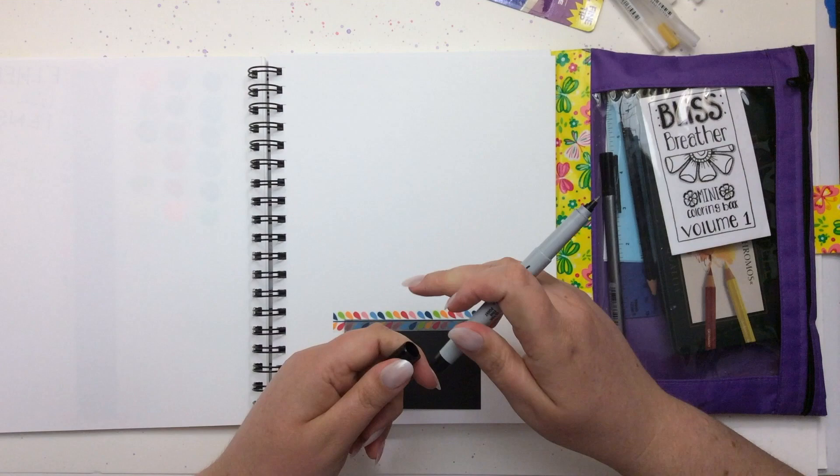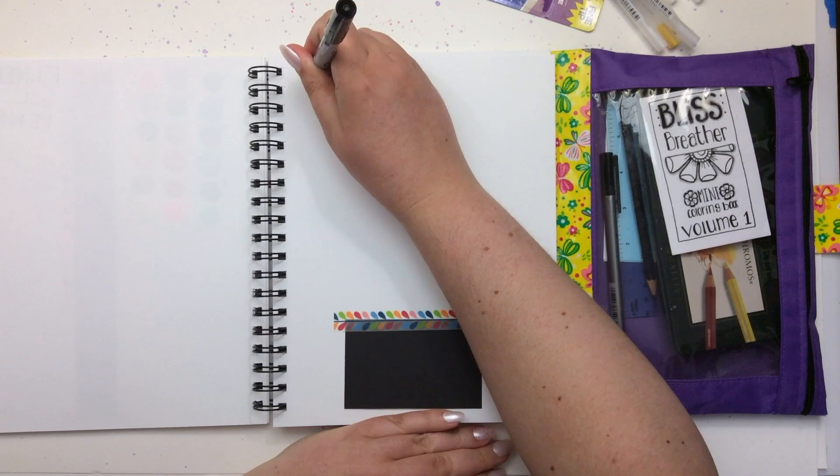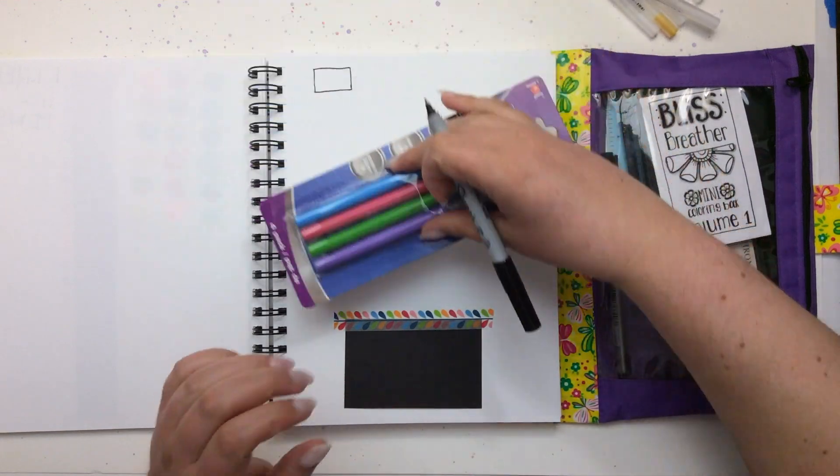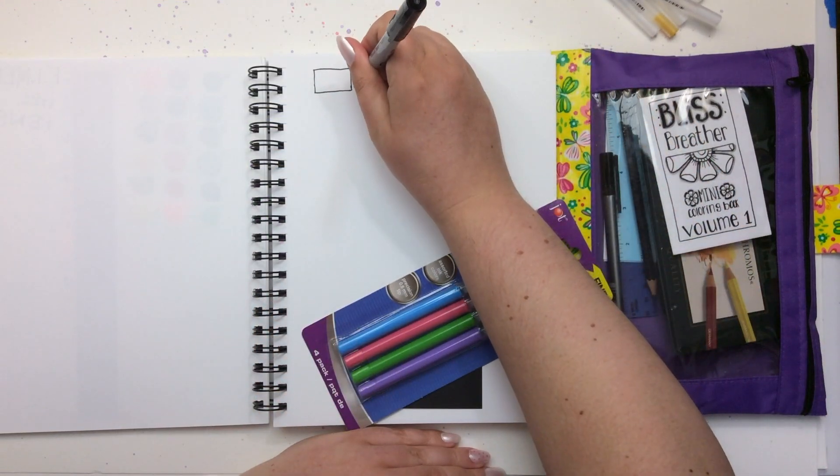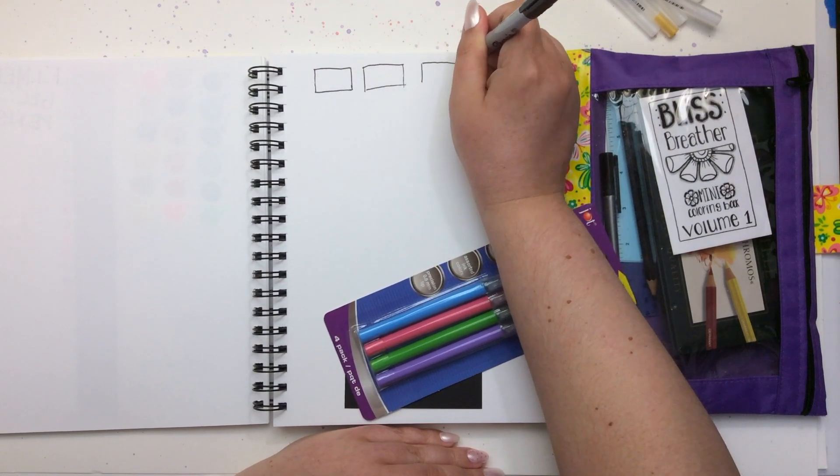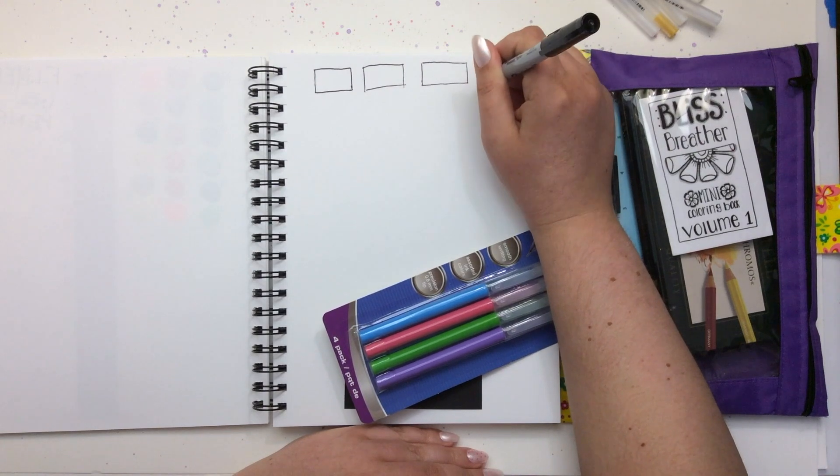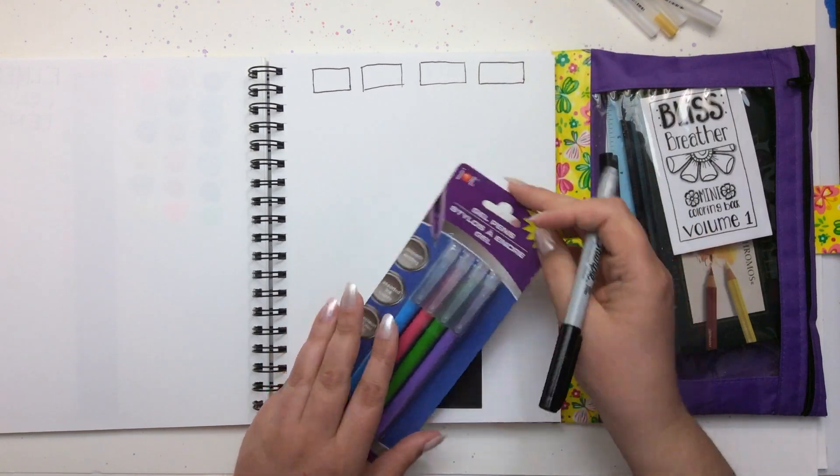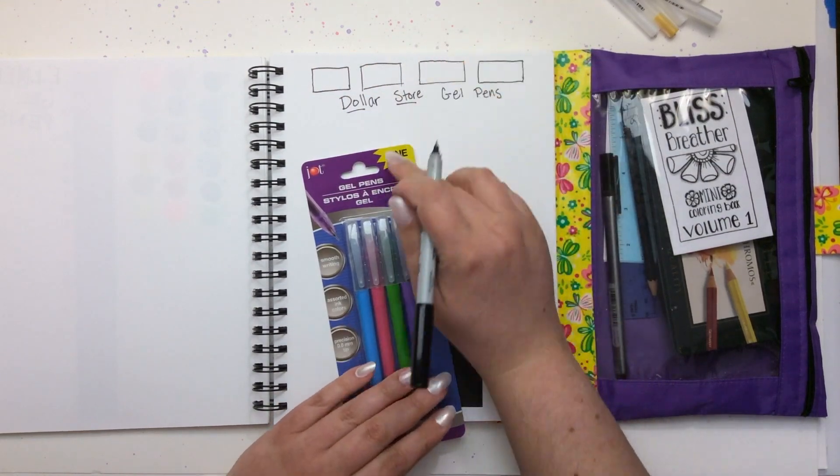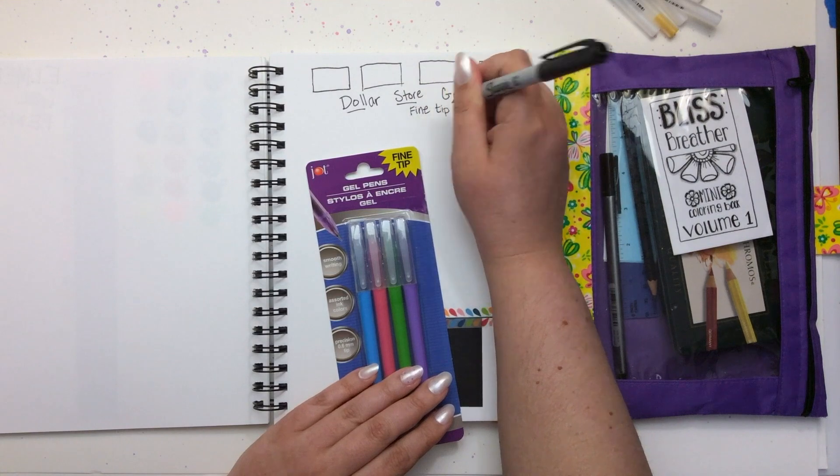I don't do anything too formal when I make my swatches. I just usually draw some rectangles for each color. This set has four colors in it. On purpose I make my rectangles nice and sloppy. I don't get out a ruler usually. I write the color name underneath them. I'm going to make a note here that these are fine tip because it might make a difference.